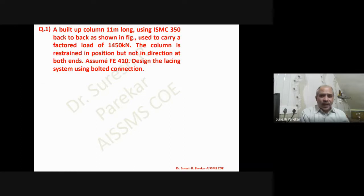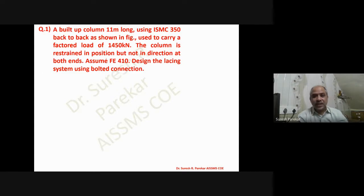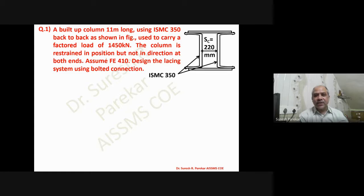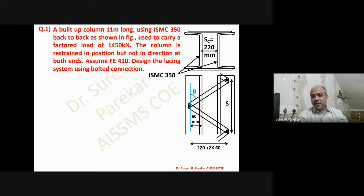Now we will go to the problems. First we will solve the single lacing system, then the double lacing system. This problem uses a single lacing system with section ISMC 350. The column section design has already been covered in the compression member lecture, so we are not redesigning the column section here.